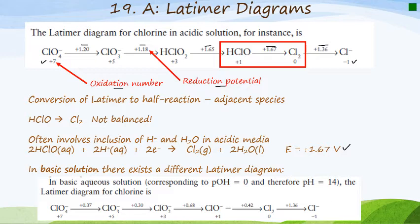So for this diagram down here, you'll see it is in base. And if you look carefully, you will see that the potential values that are above the arrows are different to those that were highlighted for you in acid.